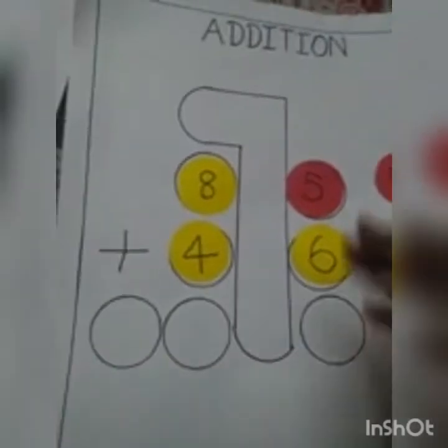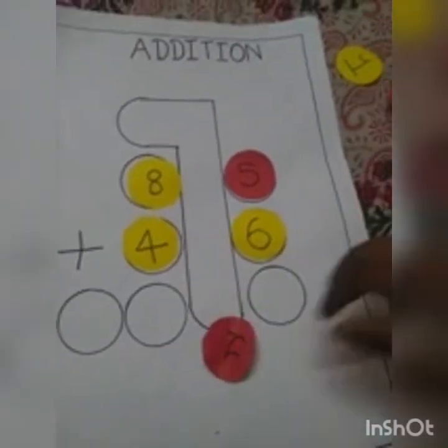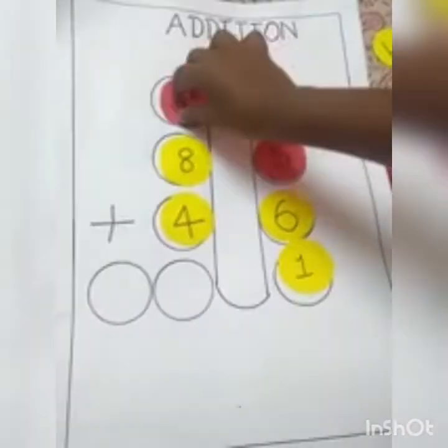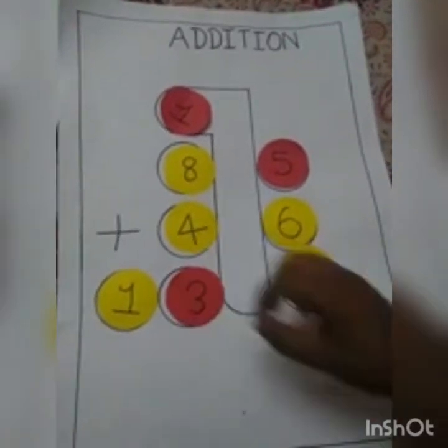The next problem: 85 plus 46. 5 plus 6 is 11. 1 plus 8 is 9. 9 plus 4 is 13. 131 is the answer.